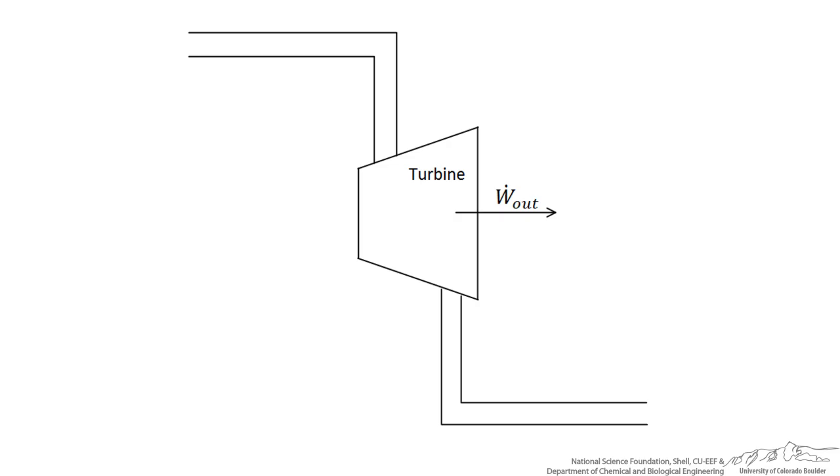This is a diagram of a turbine which we use in thermodynamics. The turbine is used to generate shaft work and it does so by extracting energy from a high pressure, high temperature stream of fluid that enters the turbine.